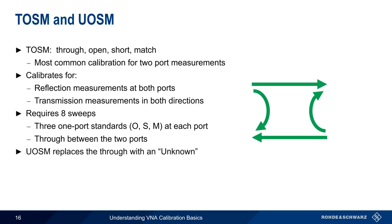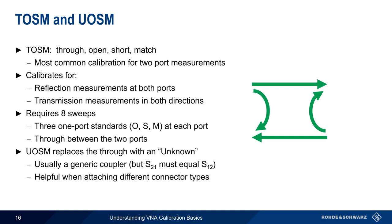In unknown open-short match, the known through calibration standard is replaced with an unknown. This is usually a generic RF coupler. The only real requirement on the unknown is that it have the same characteristics in both directions. This calibration method is helpful when our DUT has different connector types, such as an SMA on one end and an N-connector on the other.